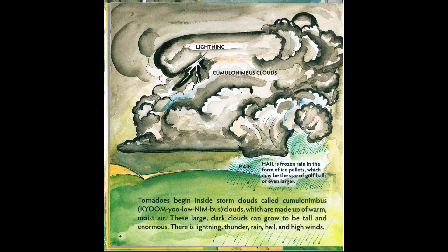Tornadoes begin inside storm clouds called cumulonimbus clouds, which are made up of warm, moist air. These large, dark clouds can grow to be tall and enormous. There is lightning, thunder, rain, hail, and high winds.